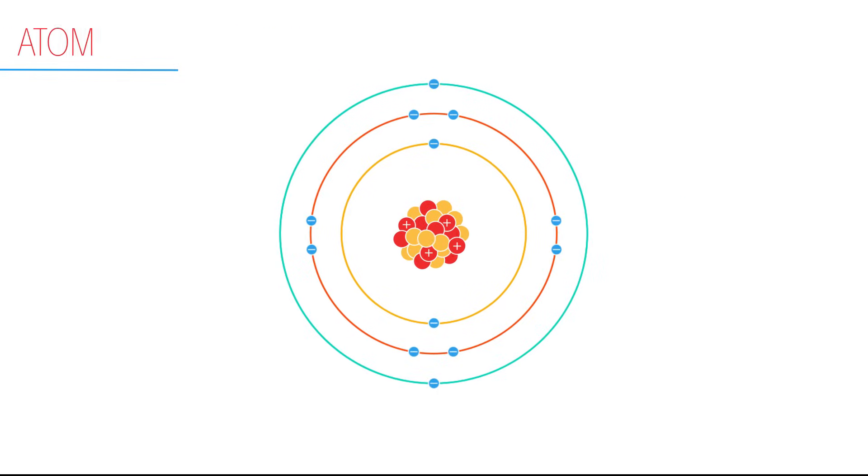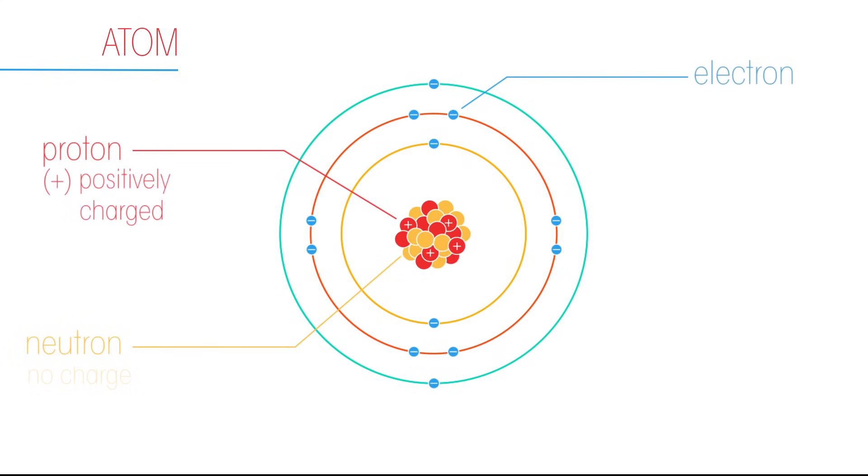An atom is composed of subatomic particles called protons, neutrons, and electrons. Positively charged protons and neutrons with no charge form the central nucleus. Negatively charged electrons orbit the nucleus.